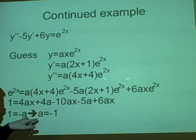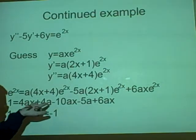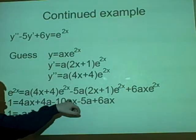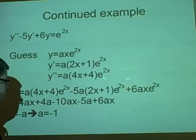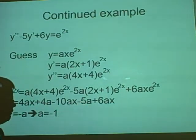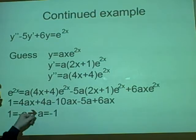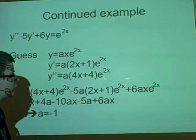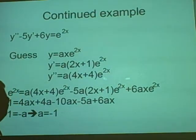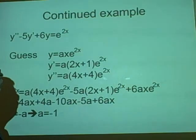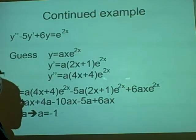And we get 1=-a. Because 4, 10, 6, minus 10, they cancel out to be 0. 4a-5a is -a. So 1=-a, a=-1.